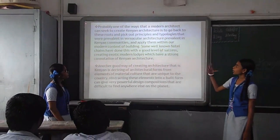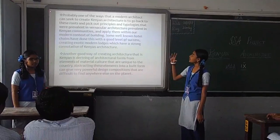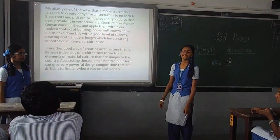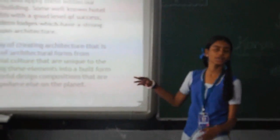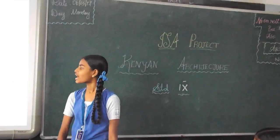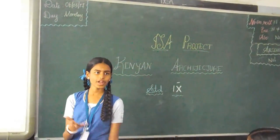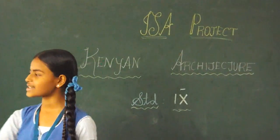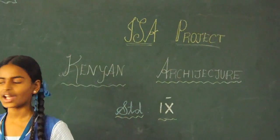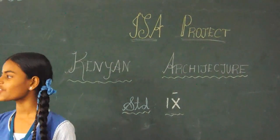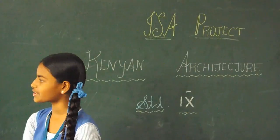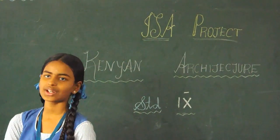A global way of unlocking paths is what the modern architect can seek when architecture has to go back to its roots and core principles and technologies. Another good way is through Kenyan architecture, which draws from strong elements of material culture that are unique to the country.